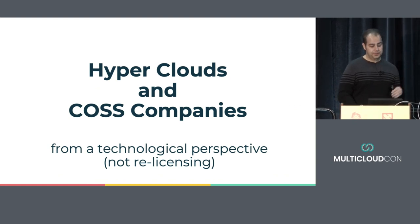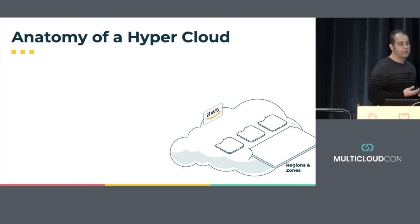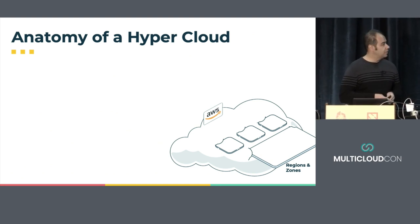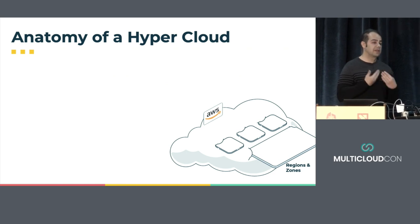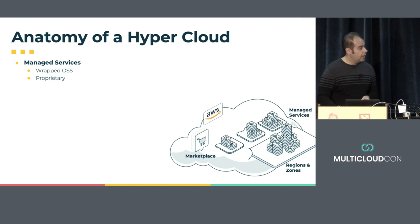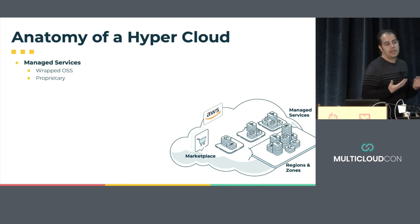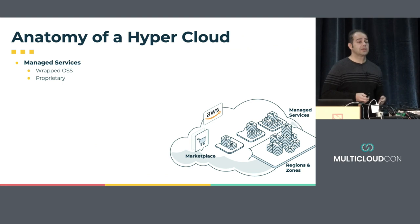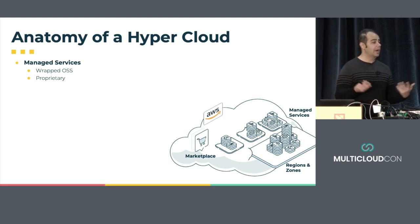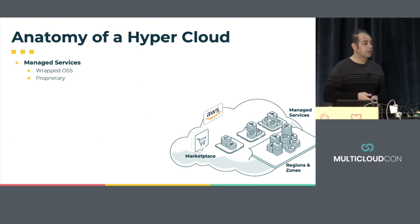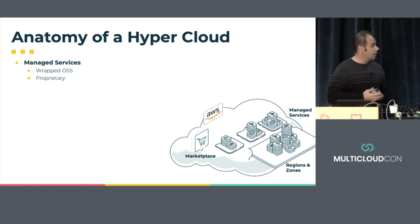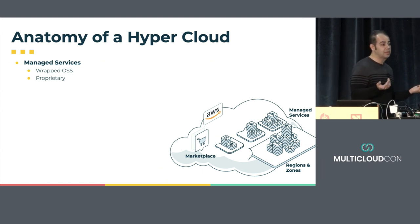So let's start right at the top and look at a typical hypercloud — you can pick your favorite one. Every single hypercloud offers a buffet of managed services. They are typically proprietary services, or they could be based on open source. If you take the case of Amazon, you have things like RDS, which offers MySQL and Postgres, and they've done all the wrapping around it to integrate it into their platform. And you have things like DynamoDB, which is a proprietary service and their own database. These services are all integrated, and you can mix and match them, and they offer integrations between them as well.